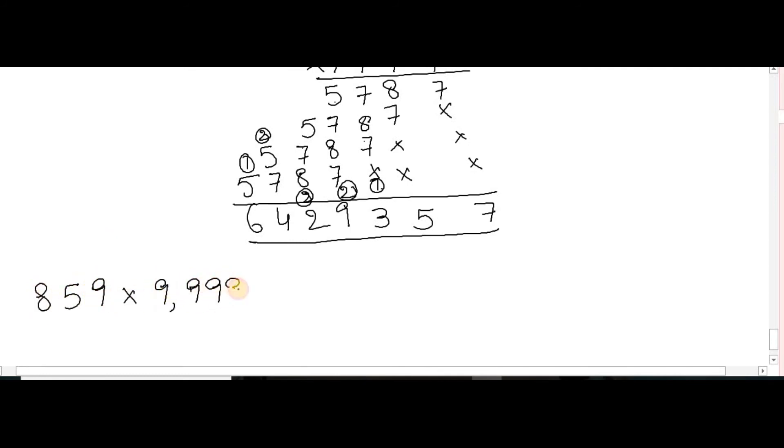859 multiplied by 9,999. We will join 0 here: 0, 8, 5, 9. Complement of 0 is 9, complement of 8 is 1, complement of 5 is 4, complement of 9 is 0.